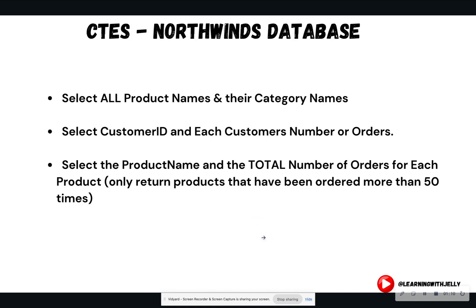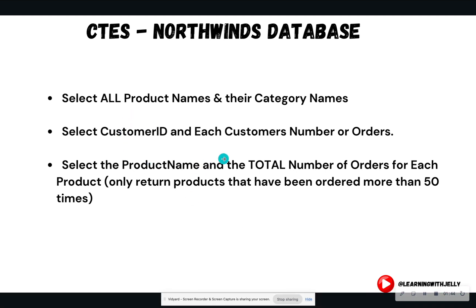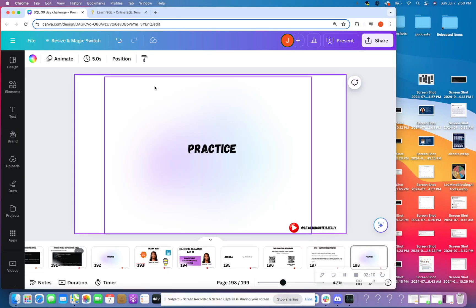These are the three questions that we are answering today. We're actually going to step out of SQLite Studio and use an online editor, SQL-Practice.com — I'm going to link this in the description below. This way we can get used to looking at a different schema to test your ability when given new data. We're going to start easy and then increase difficulty. The questions involve selecting product names with their categories, selecting customer IDs with order counts, and selecting product names with total orders filtered to more than 50 times.